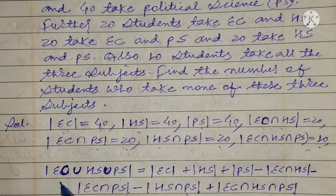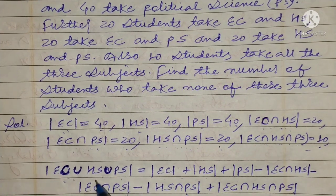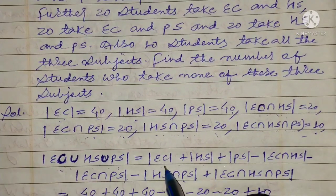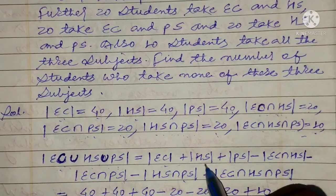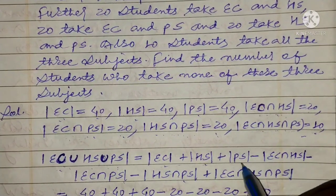Total students who take: number of EC union HS union PS is equal to number of EC plus number of HS plus number of PS minus number of EC intersection HS minus number of EC intersection PS minus number of HS intersection PS plus number of EC intersection HS intersection PS.